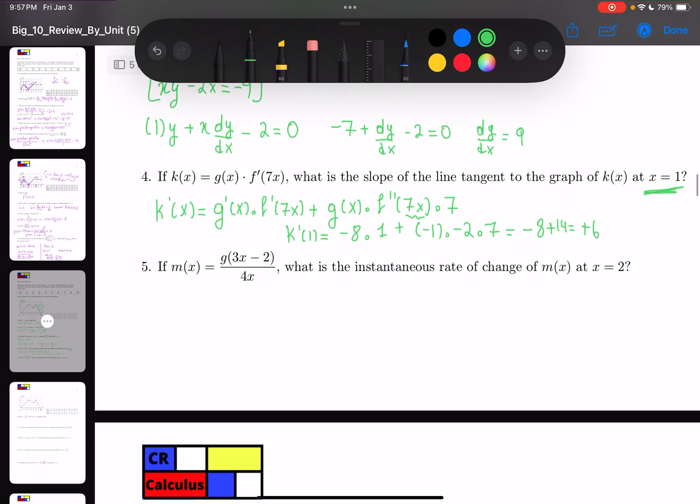Number 5: same question, instantaneous rate of change is the same as slope of the line tangent. So m'(x) is going to be quotient rule.